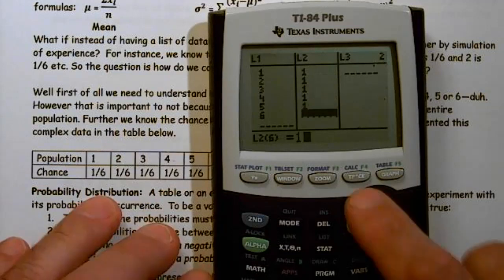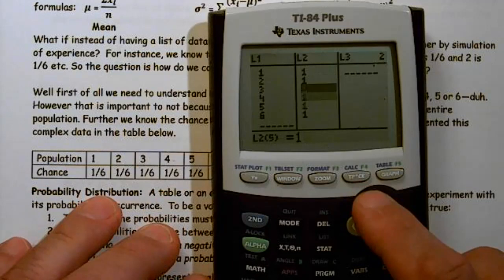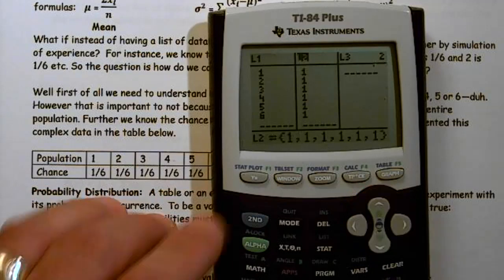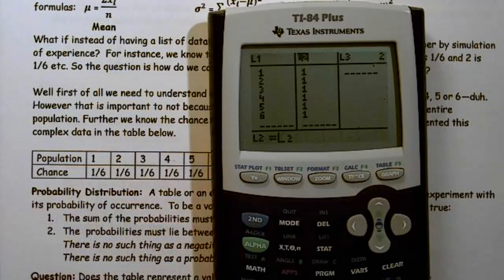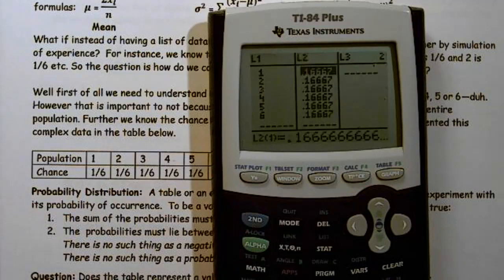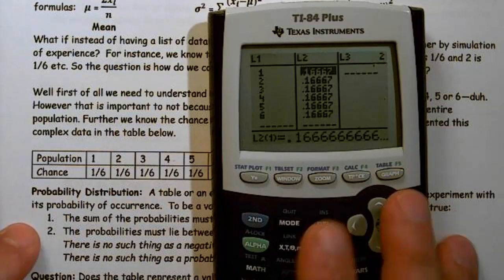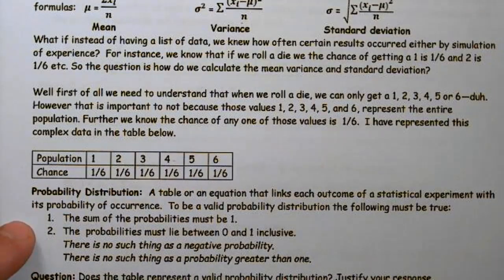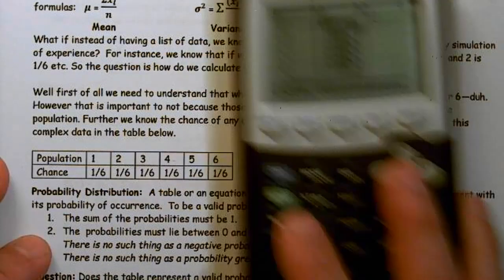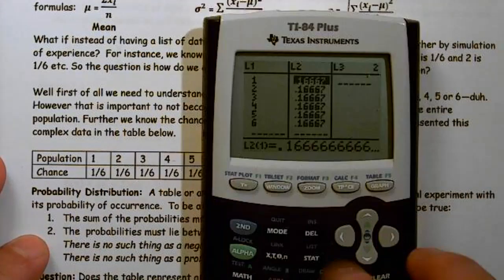But I'm going to show you something a little bit different, not that you have to do it this way. But I'm going to go up all the way to the top of column L2. And I'm going to go second 2, which tells me I'm looking at L2. And I'm going to divide it by 6. And it gives me the probabilities. But it probably would have been just as easy to go 1/6, 1/6, 1/6.